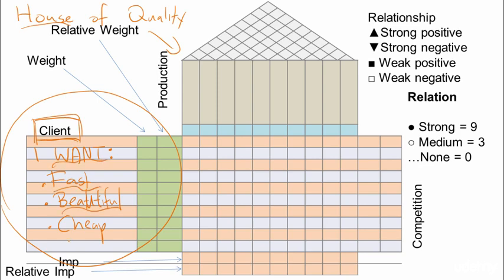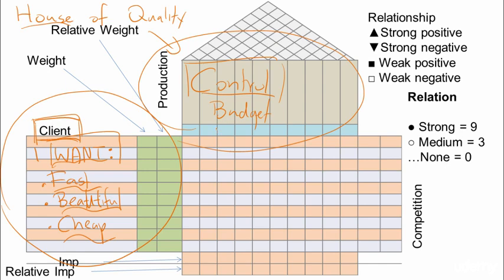In this part of the house, we write down our production factors. These are the things that we control, we have full control over them. For instance, budget, materials, staff, etc. These are the things that help us achieve the customer wants. What the client wants we cannot control, that is an external given, but here we have the things that we can control.